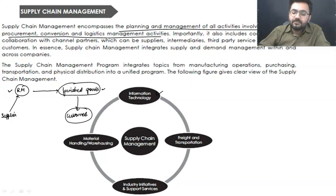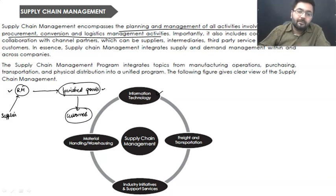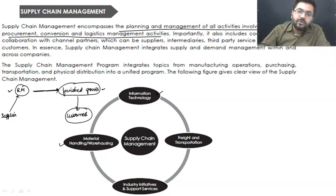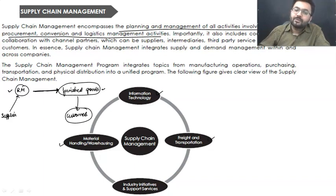Information and technology is involved because we are going to manage the supply of goods across various channels or services. Let it be any kind of services in your organization — that needs to be managed properly. Apart from that, material handling and warehousing: if you have purchased raw material, you are going to shift it — not hold it on any road — definitely you are going to have a warehouse where you hold your inventory for a particular time period.